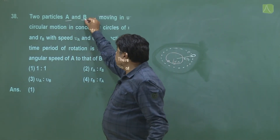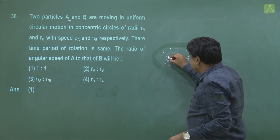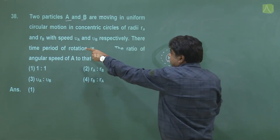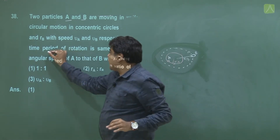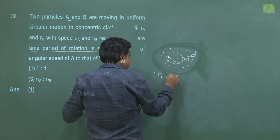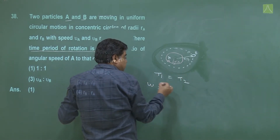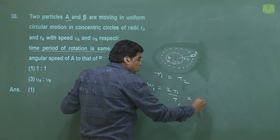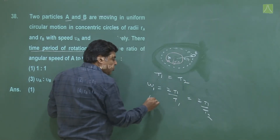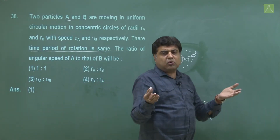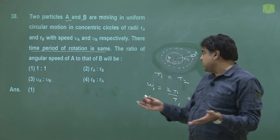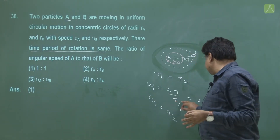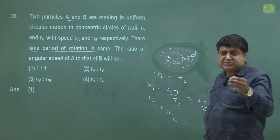We have two particles a and b moving in circular motion with different radii, but the time period of rotation is the same. Since T₁ = T₂, and angular speed ω = 2π/T, omega₁ = 2π/T₁ and omega₂ = 2π/T₂. When T₁ equals T₂, omega₁ equals omega₂. So if the time period is the same, the angular speed is automatically the same regardless of radius.